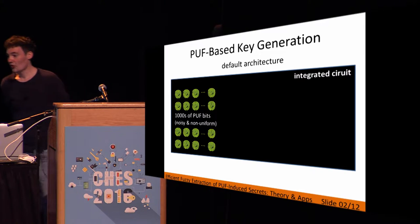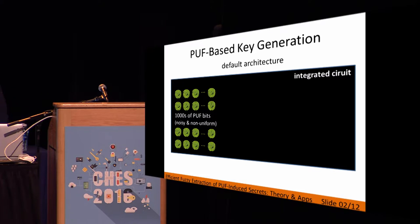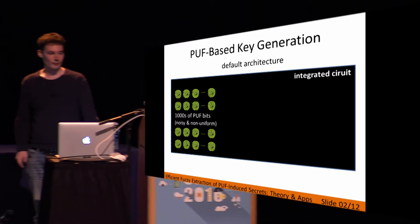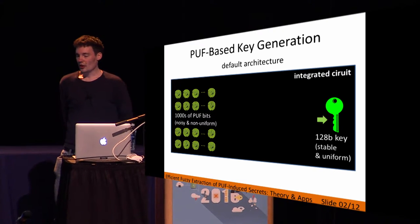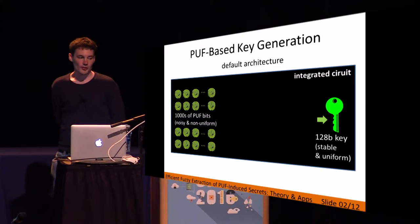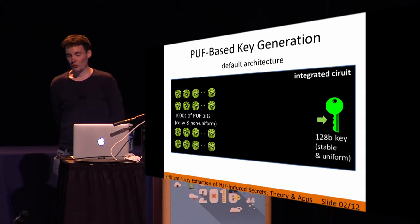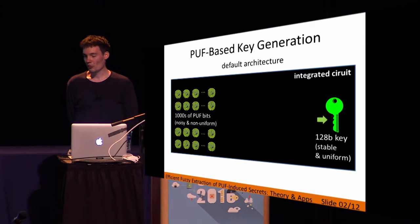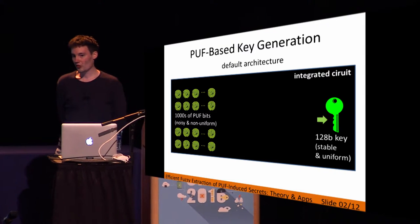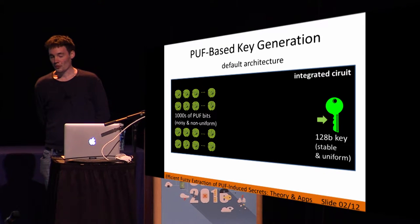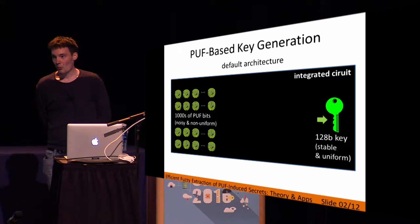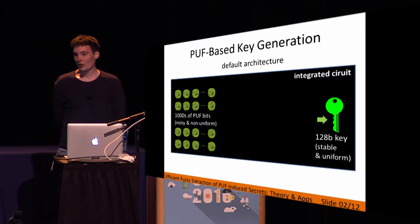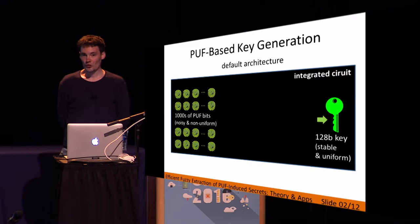These bits are noisy and non-uniform. In the end, we want to have a secret key — for instance, a 128-bit key — that is stable and uniform. So we need to solve two problems: one is the noisiness, and two is the non-uniformity. To do that, we need some additional digital logic in between, and that is referred to as a fuzzy extractor.